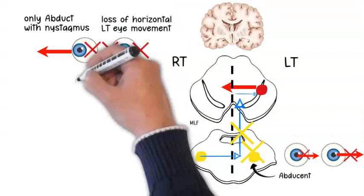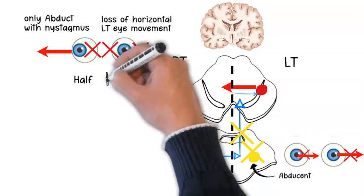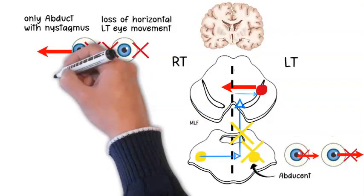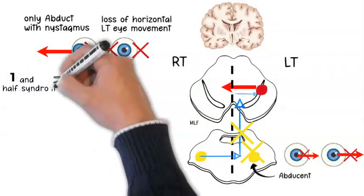While the right eye can only abduct toward the target, and this is referred to as a half. This will produce the syndrome of one and a half syndrome.